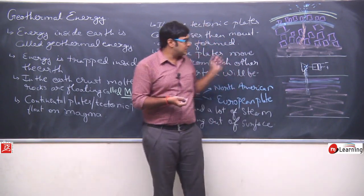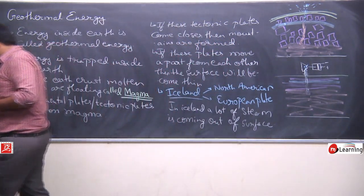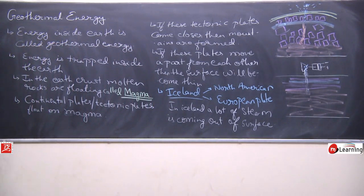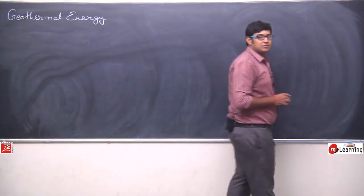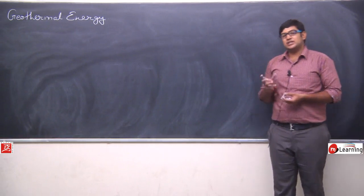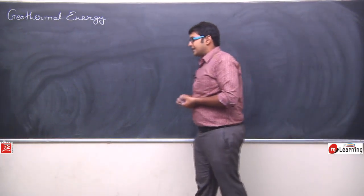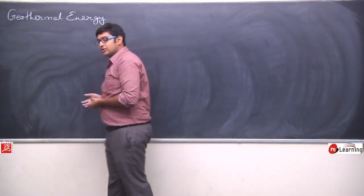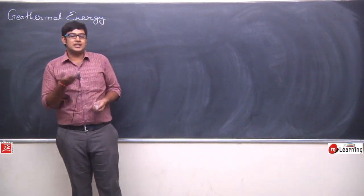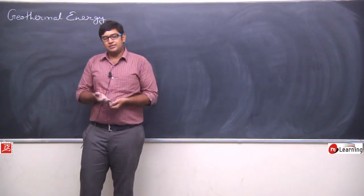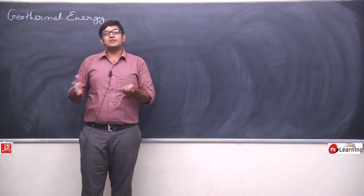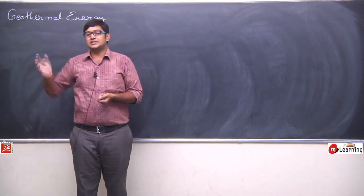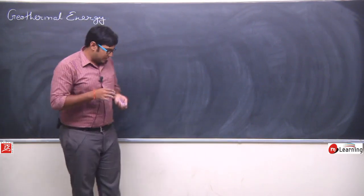So we thought about how else to use geothermal energy. We developed a new method to use geothermal energy which is renewable in nature. The first method's problem was that the hot spot could dry up within 20–30 years, and with so much investment, we want it to last at least hundreds of years.